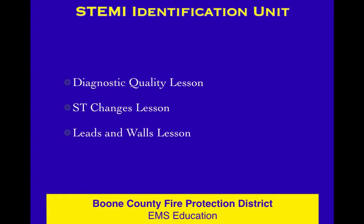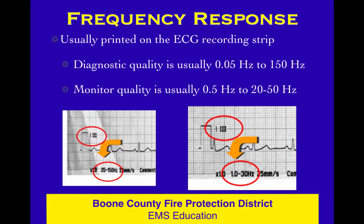The diagnostic quality lesson, the ST changes lesson — we'll talk about leads and walls. This one's on diagnostic quality. And this may seem like a minor detail, but it's really important because you cannot make decisions about ST changes unless you have the correct frequency response. Frequency response is the amount of filters applied to the EKG — it determines how fine an analysis you can make. You need a diagnostic quality EKG, which in the field means a 12-lead, in order to look for ST elevation or ST depression.